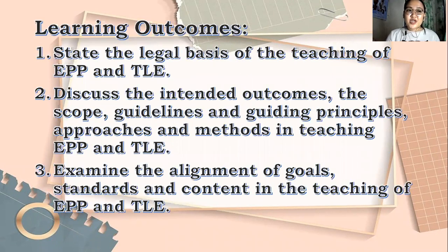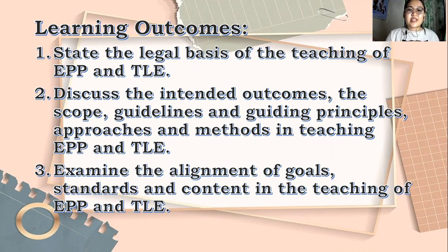This chapter has three learning outcomes. First, state the legal basis of the teaching of EPP and TLE. Second, discuss the intended outcomes, the scope, guidelines, and guiding principles, approaches, and methods in teaching EPP and TLE. Third, the alignment of goals, standards, and content in the teaching of EPP and TLE.